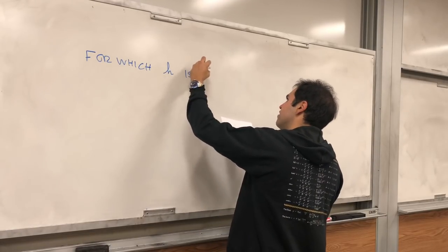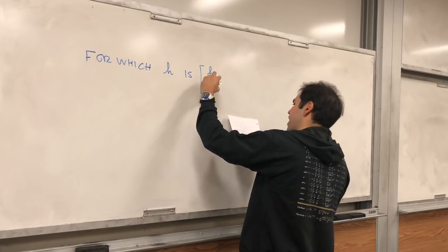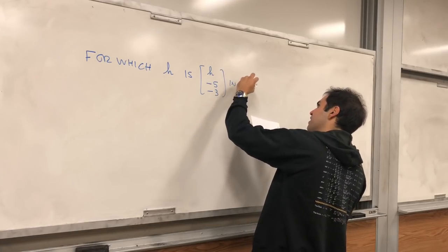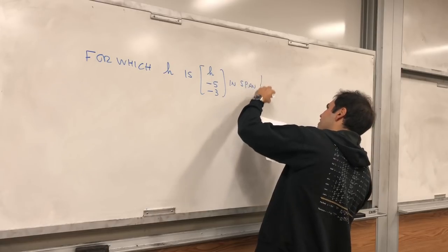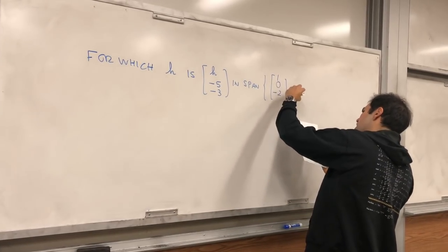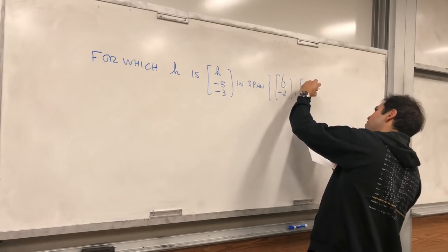For which h is the vector [h, -5, -3] in the span of the vectors [1, 0, -2] and [-3, 1, 8].